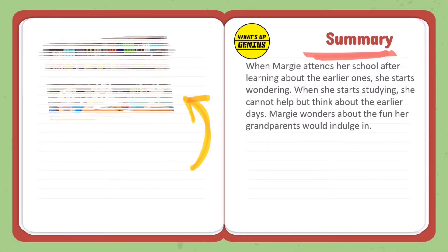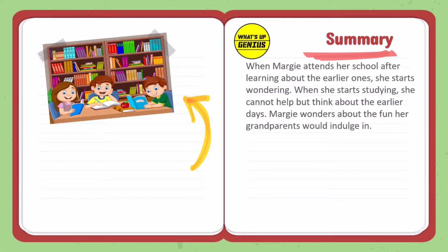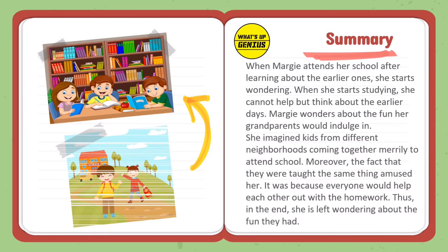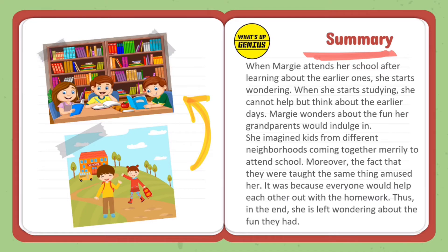When Margie attends school after learning about earlier ones, she starts wondering. As she studies, she cannot help but think about the earlier days. She wonders about the fun her grandparents would have had, imagining kids from different neighbourhoods coming together merrily to attend school. The fact that they were all taught the same things amused her, because everyone would help each other out with homework. In the end, she is left wondering about the fun they had.